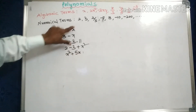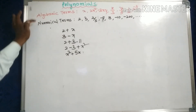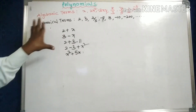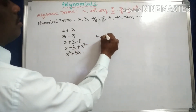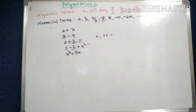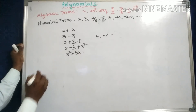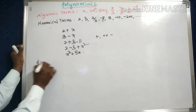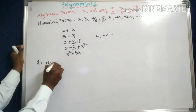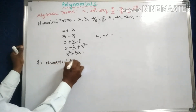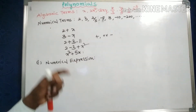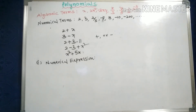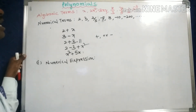The terms connected by the symbols plus or minus is called an expression. Expressions are of two types. One is a numerical expression. In a numerical expression, all terms are numericals.